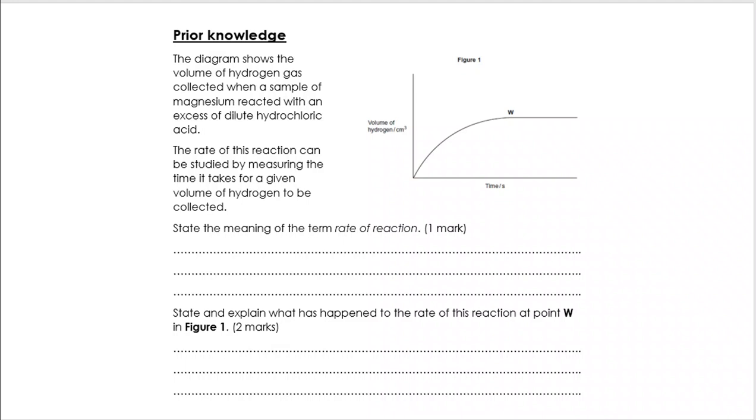But to start off with, you were asked to state the meaning of the term rate of reaction. So what we're looking for here is that it is the rate of change of concentration. That's a really important fact to retain. And it's the concentration of reactants or of product. The concentration of reactants will go down in a reaction and the concentration of products will go up. So you can see here that we're measuring the production of hydrogen. So it's concentration of products that we're using here to determine rate of reaction. And it's over time. And that's really important when we get to units a little later in this video.